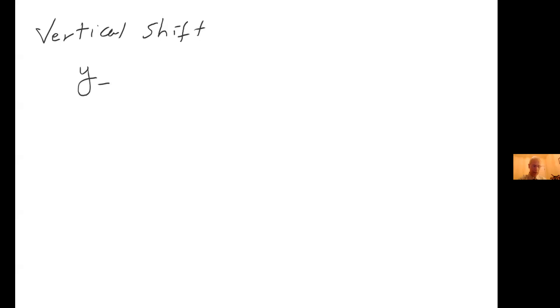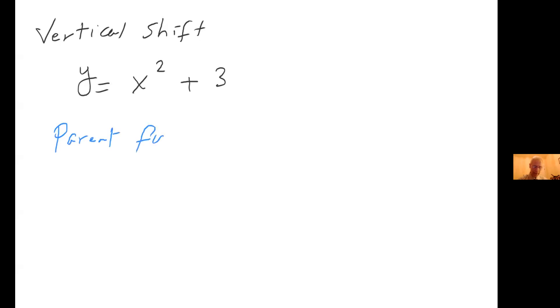So we talked about horizontal shift. The next thing I want to discuss is vertical shift. Suppose you have y = x² + 3. This one is easy for everyone to see, because whatever the value of x² is, you are adding 3 units to the output. So it is going to be 3 units shifted up. The parent function is still x², and the graph moves 3 units up. I've never had a student struggle with vertical shift.